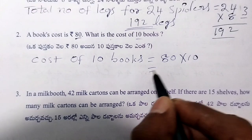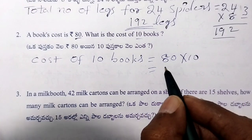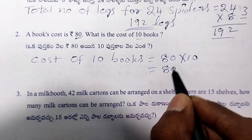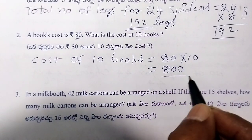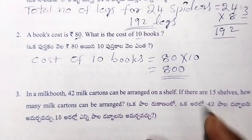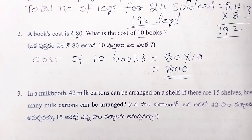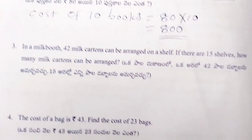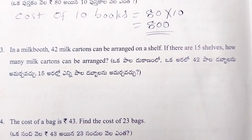So, the cost of 10 books is equal to 800.